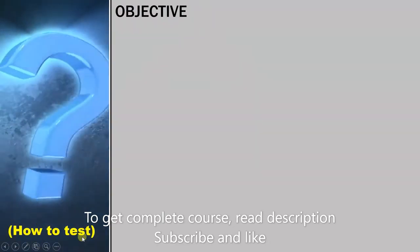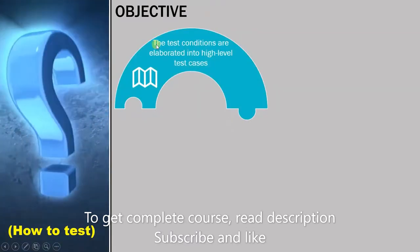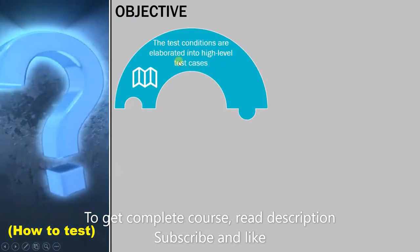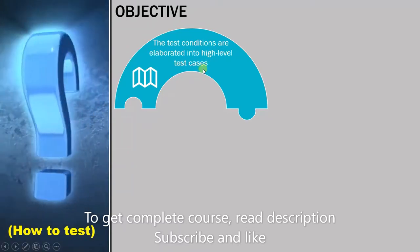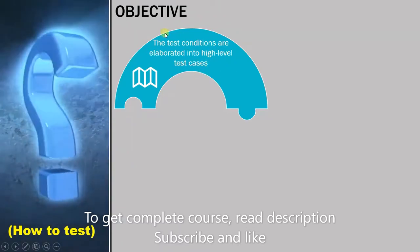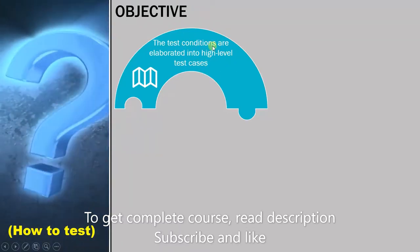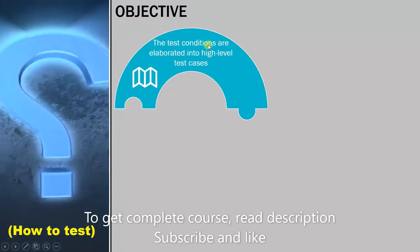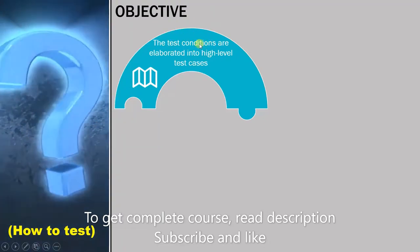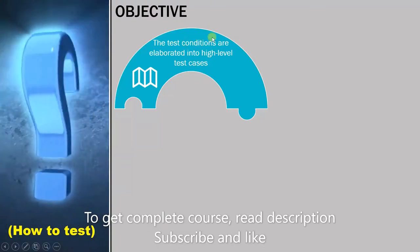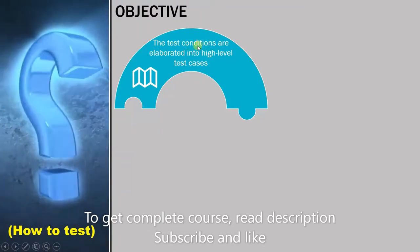Now the first objective of test design is the test conditions are elaborated into high level test cases. We already know how to create test conditions. These are made in the test analysis stage. Using these conditions as input we now have to create high level test cases. That will be called a test design.